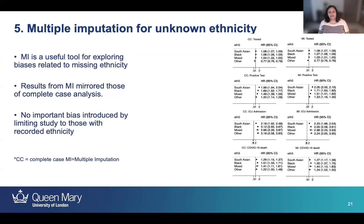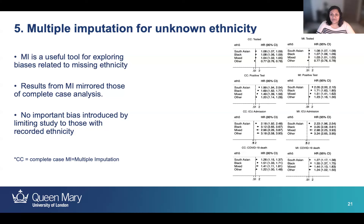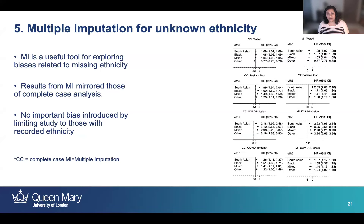Thinking about methods for dealing with missing data: we used multiple imputation for unknown ethnicity, which is a useful tool for exploring biases relating to missing ethnicity. When we completed our analysis with complete cases — excluding people with missing ethnicity — and then with multiple imputation, we found very similar results. We were able to conclude that there were no important biases introduced by limiting our study to those with recorded ethnicity.